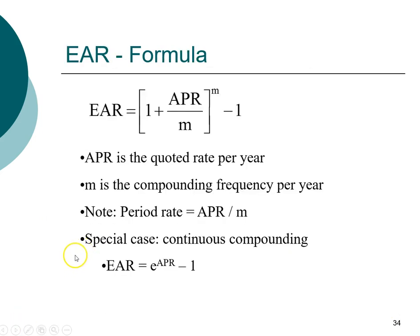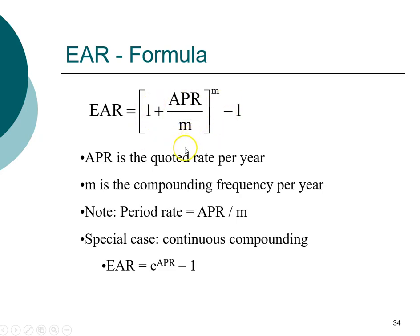We can generalize this concept into a formula. Remember that a formula is just a shortcut. To compute the EAR — effective annual rate — all you need is the annual percentage rate and M, the compounding frequency per year. If this is monthly compounding, M is 12. If quarterly, M is 4. This is a good time to pause and write this formula on your formula sheet.